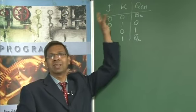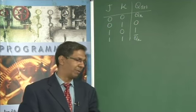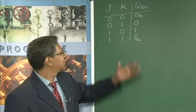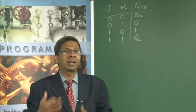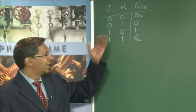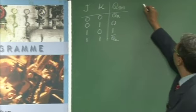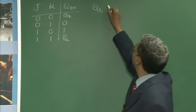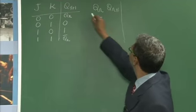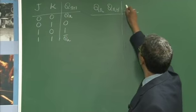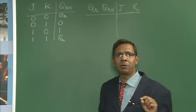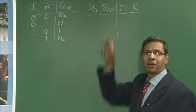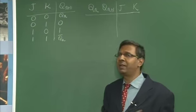Now we look at this in a slightly different way. Instead of the standard truth table, we write a state transition table. Given the present output QN and the new output Q(N+1), what should the values of J and K be? We are reversing the role — given a previous output and a desired new output, what inputs are needed? This is a very important observation.